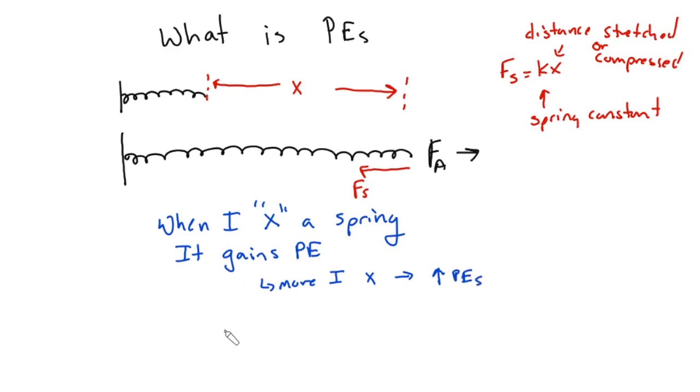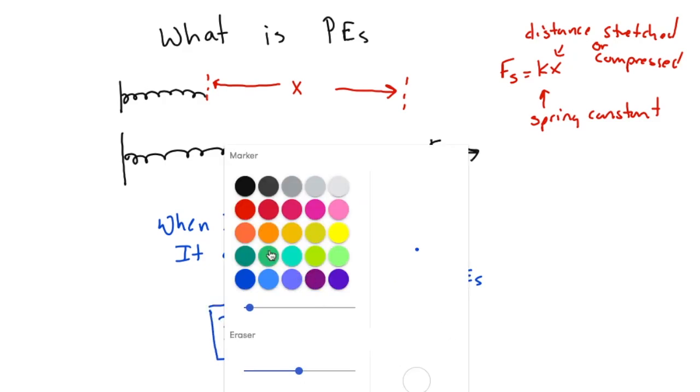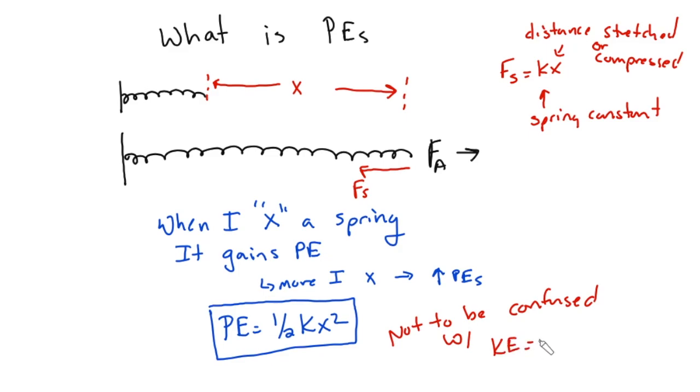And this is given by the relationship of PEs equals one half Kx squared. Now this is not to be confused with KE, which is just one half Mv squared. They look very similar. They're both energy formulas and that's fine. But don't be confused by this and never ever forget the squared.